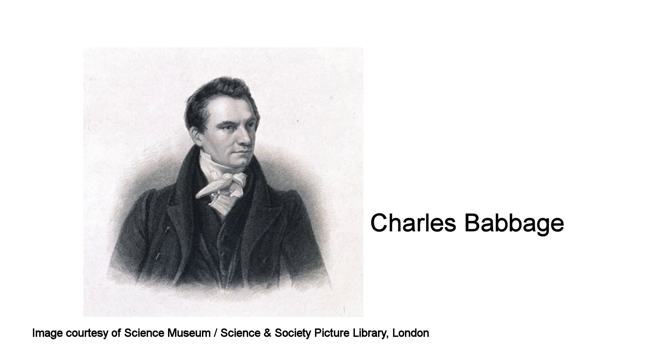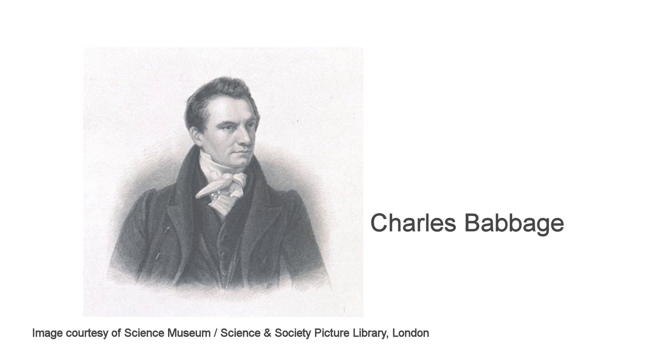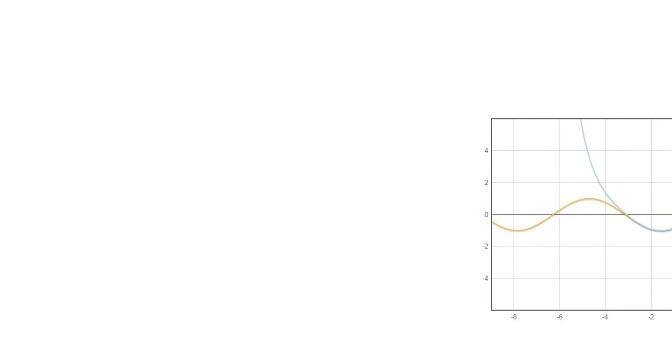In the 1820s, the English mathematician Charles Babbage began to design a mechanical device, called a difference engine, for computing polynomial functions.